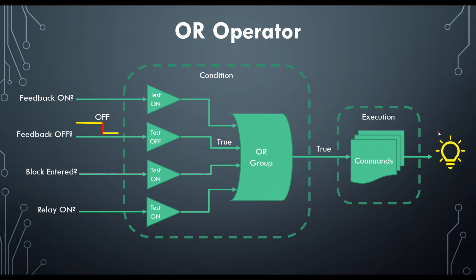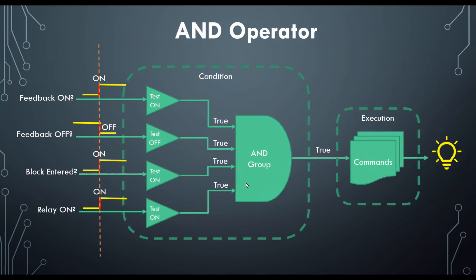Whereas with the logical AND operator, all of the inputs must be true for the output of the AND operator to be true. Furthermore, all of the inputs need to be true at the same time, and that would pose a problem for a purely event-driven AND operation.